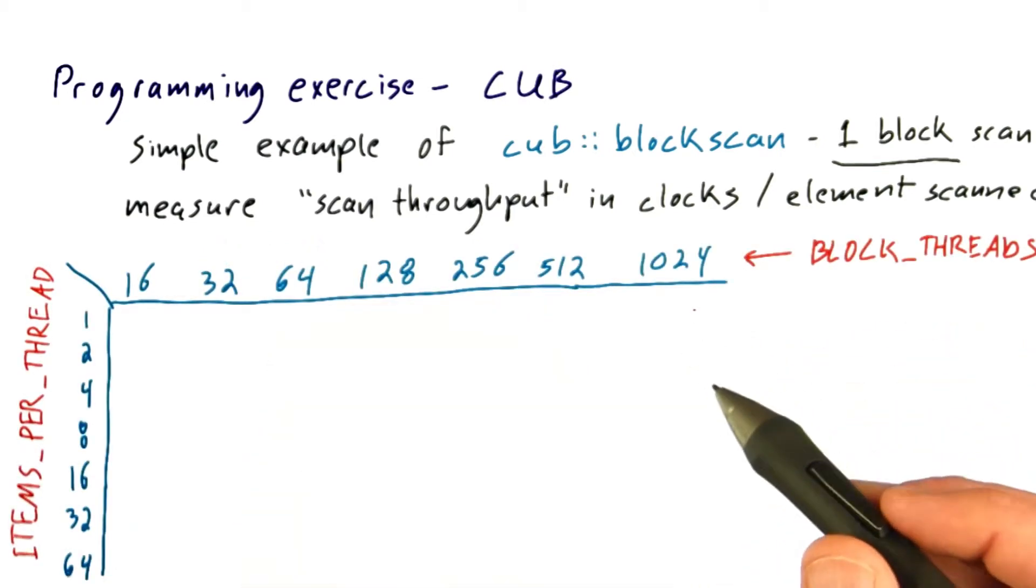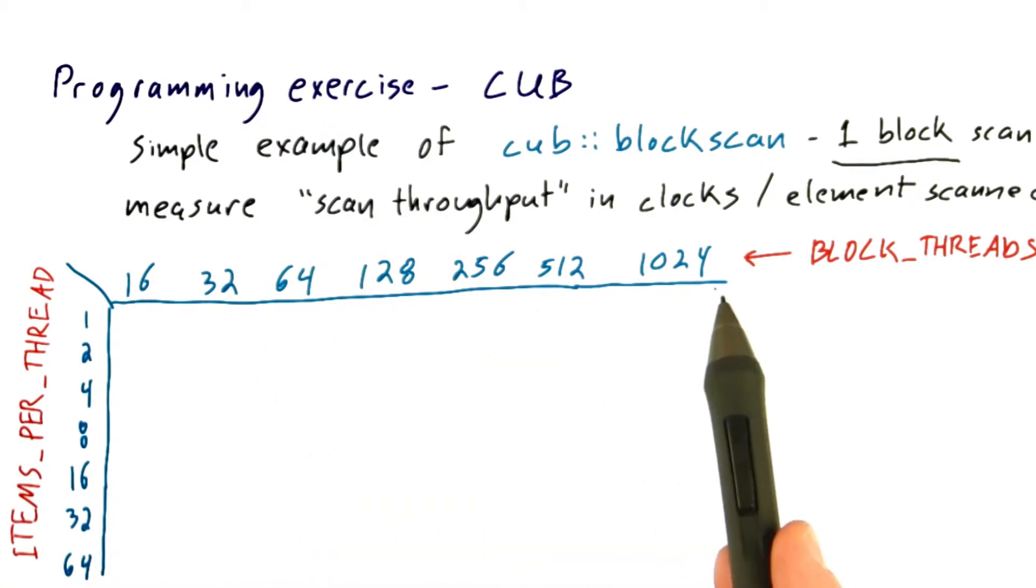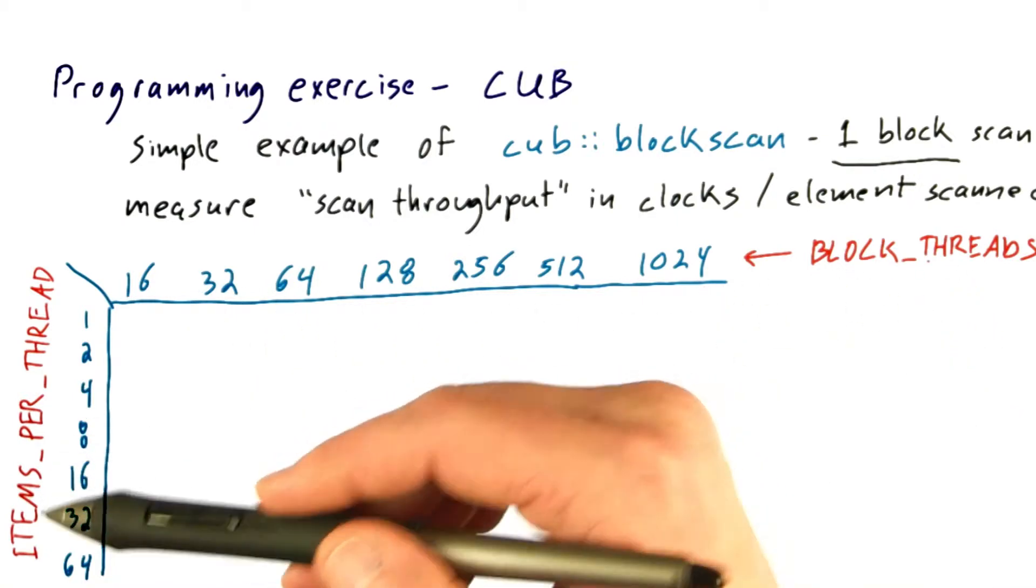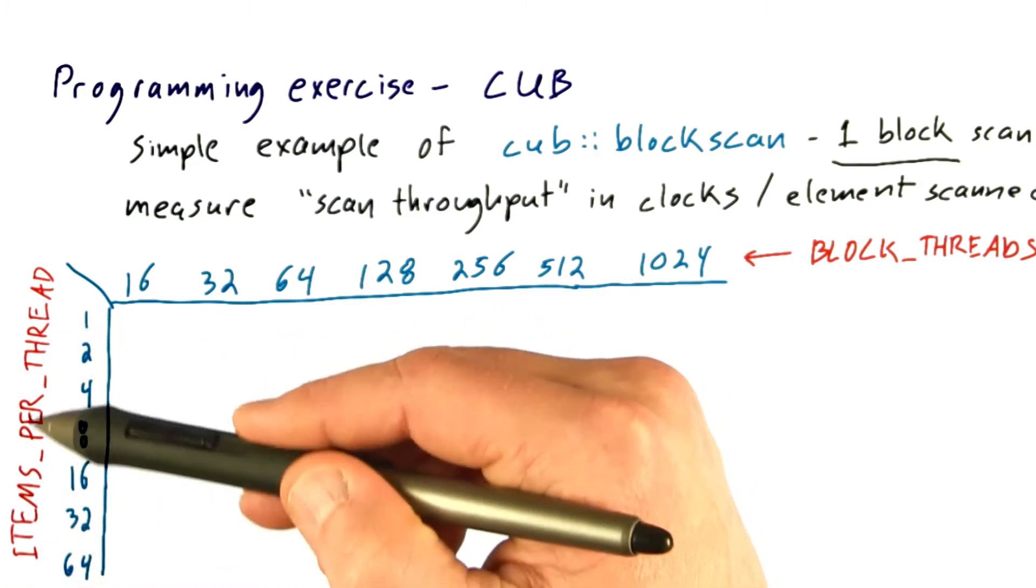I want you to fill out this performance matrix. It has the number of threads per block, represented in the code with block_threads, and the number of items processed per thread, represented with items_per_thread.